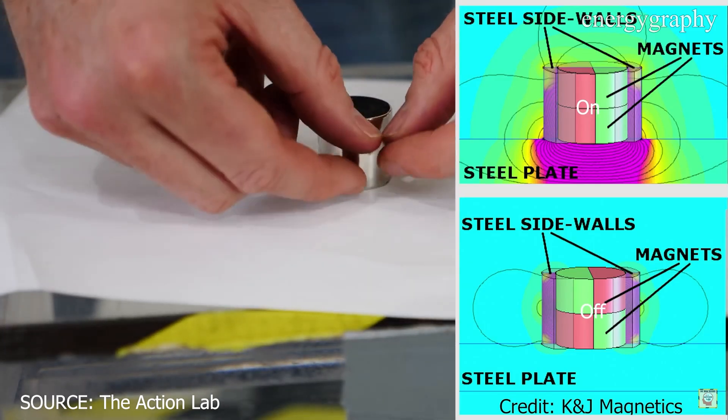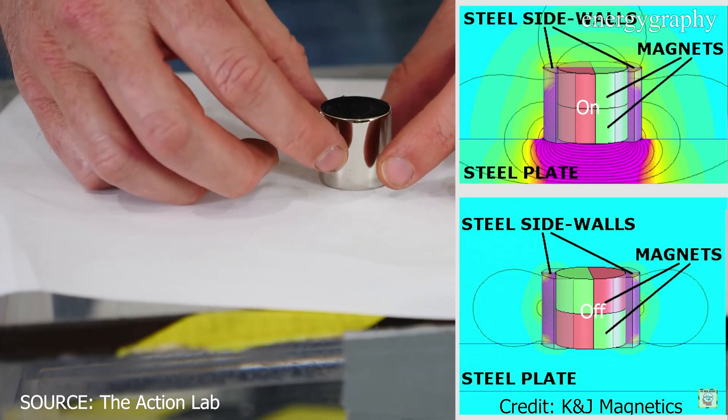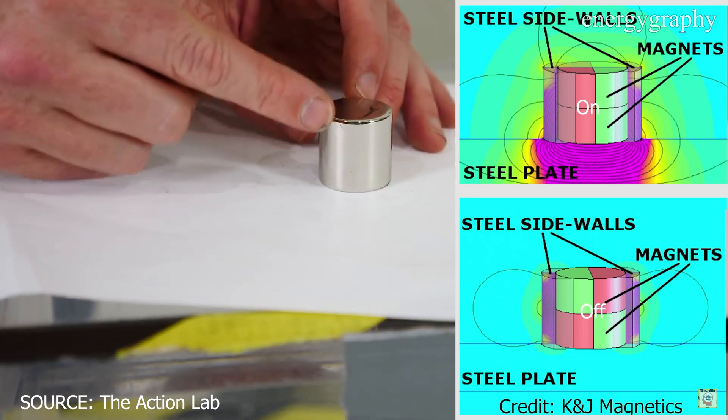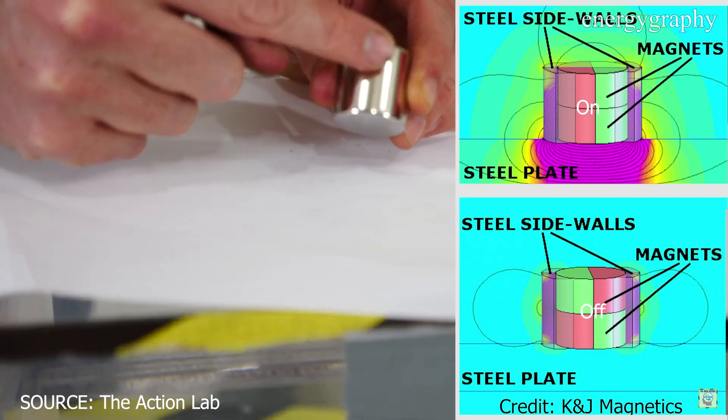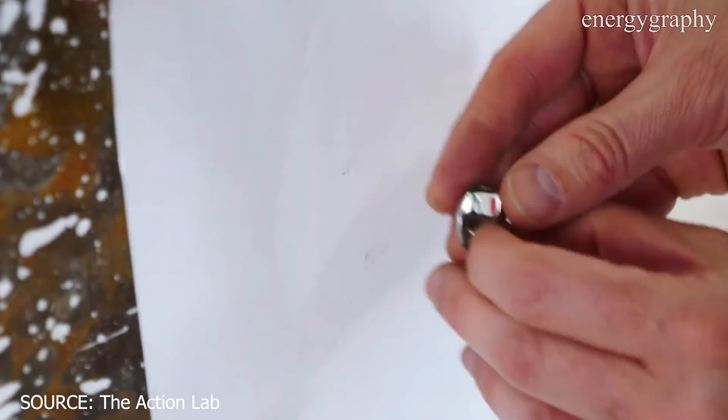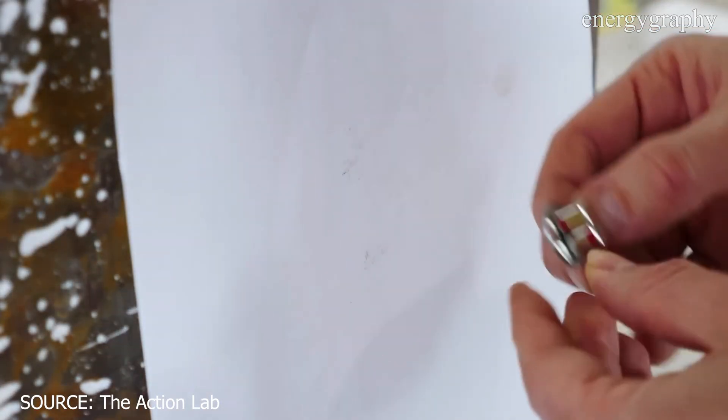Switching mechanism: The key to turning the magnet on and off lies in the arrangement's flexibility. By altering the relative position or orientation of this magnet, you can change how their magnetic fields interact.